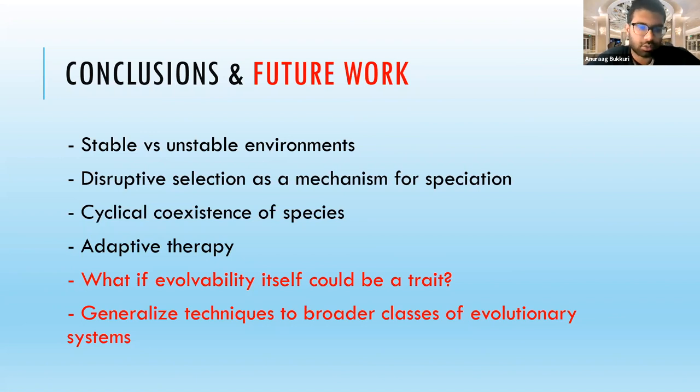In the future, things we're looking at now: what if the evolvability itself could be a trait? In cancer, it's been shown that these cells can adopt a transient polyaneuploid cancer cell state, which reduces their division rates but also allows them to increase variation and reduces the effects of therapy on themselves. It also relates to this idea of facultative evolvability, which has deep connections to things like learning schedules in machine learning and human cognition.